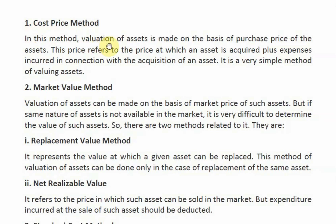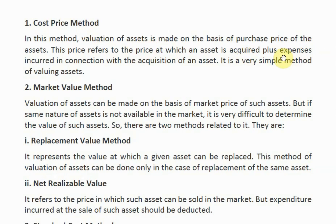The first method is the cost price method. Here, if we want to do the valuation of an asset, we do it on the basis of the purchase price of the asset — the price at which we purchased the asset — and we also add the expenses incurred in purchasing that asset. For example, if I bought an asset for Rs. 10,000 and the transportation and installation expenses were Rs. 1,000, then the total asset value under cost price method becomes Rs. 11,000.